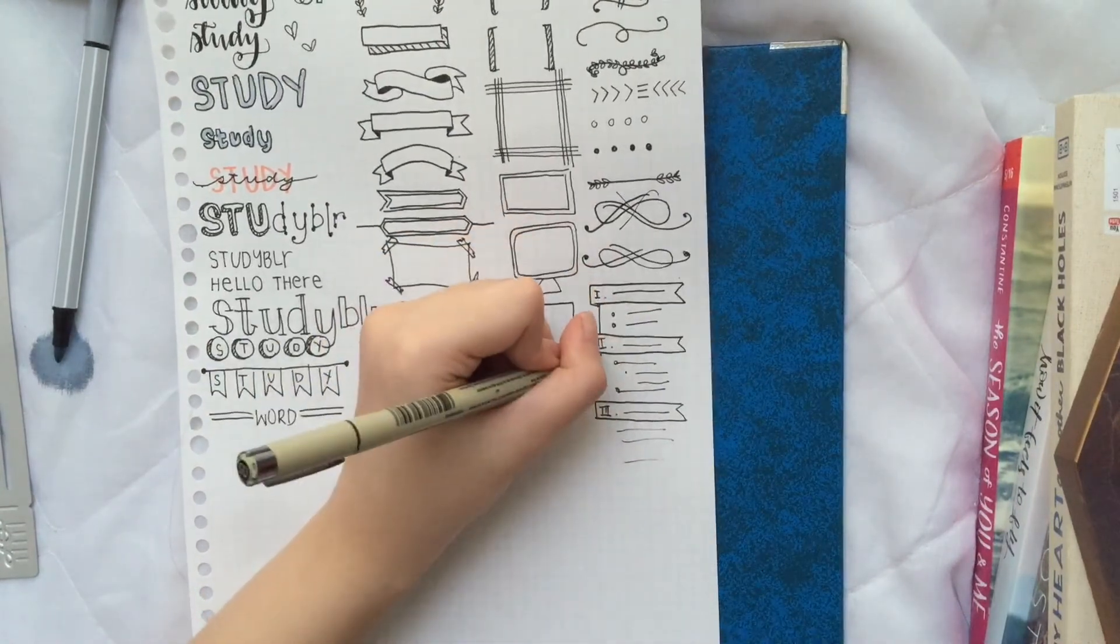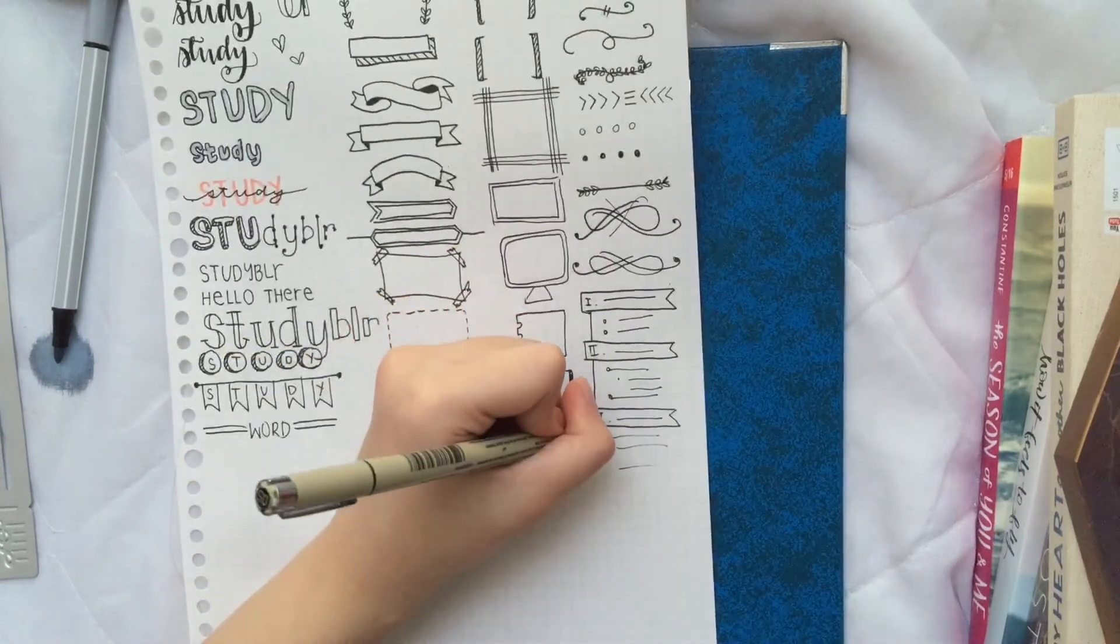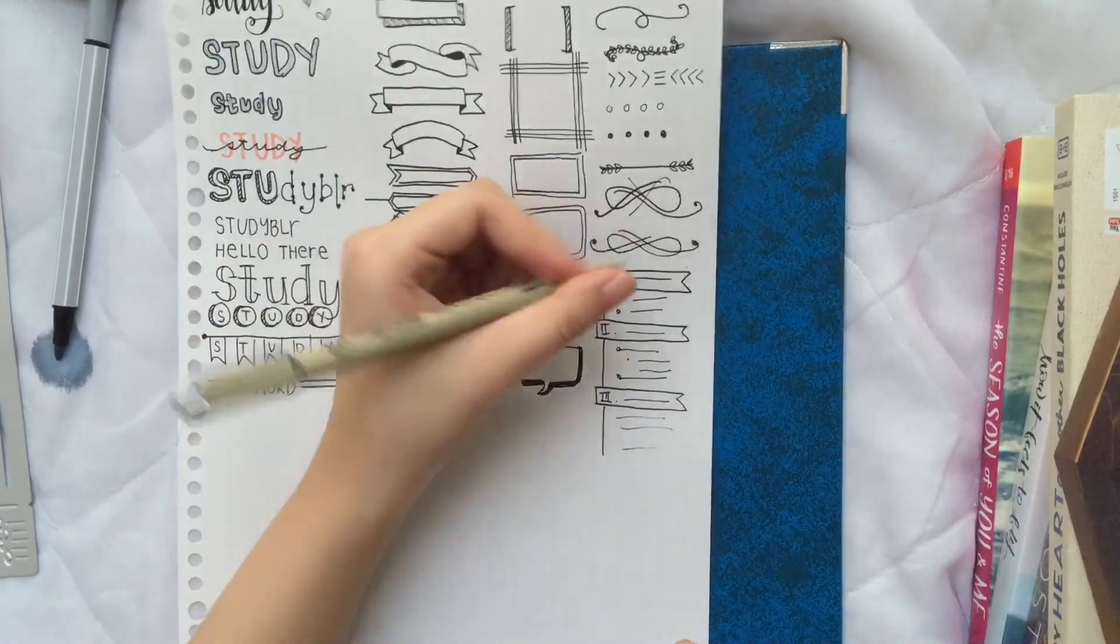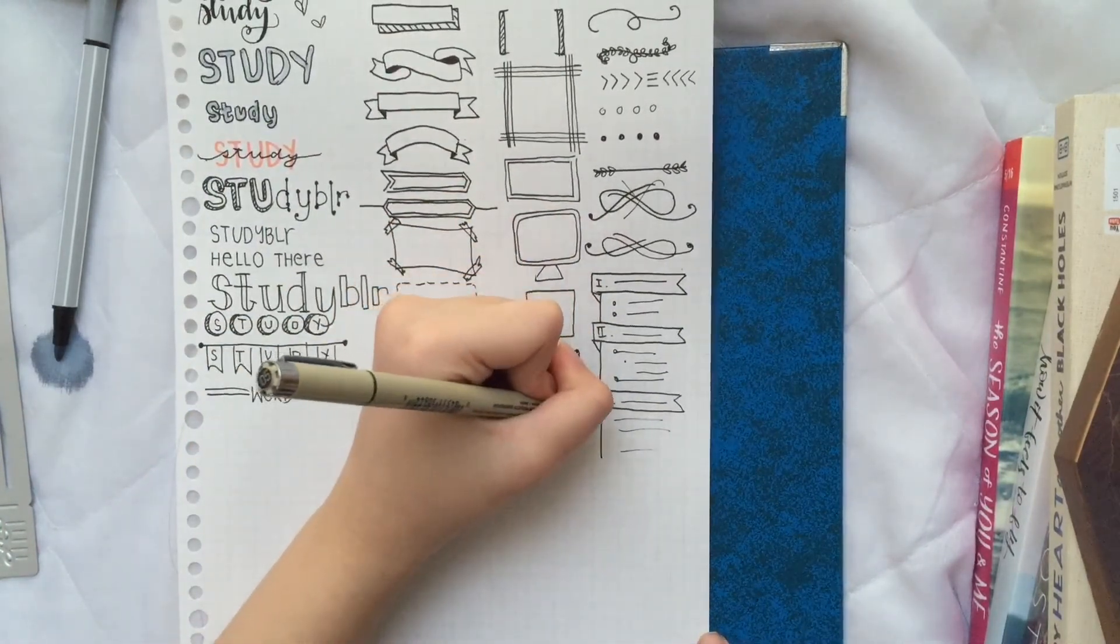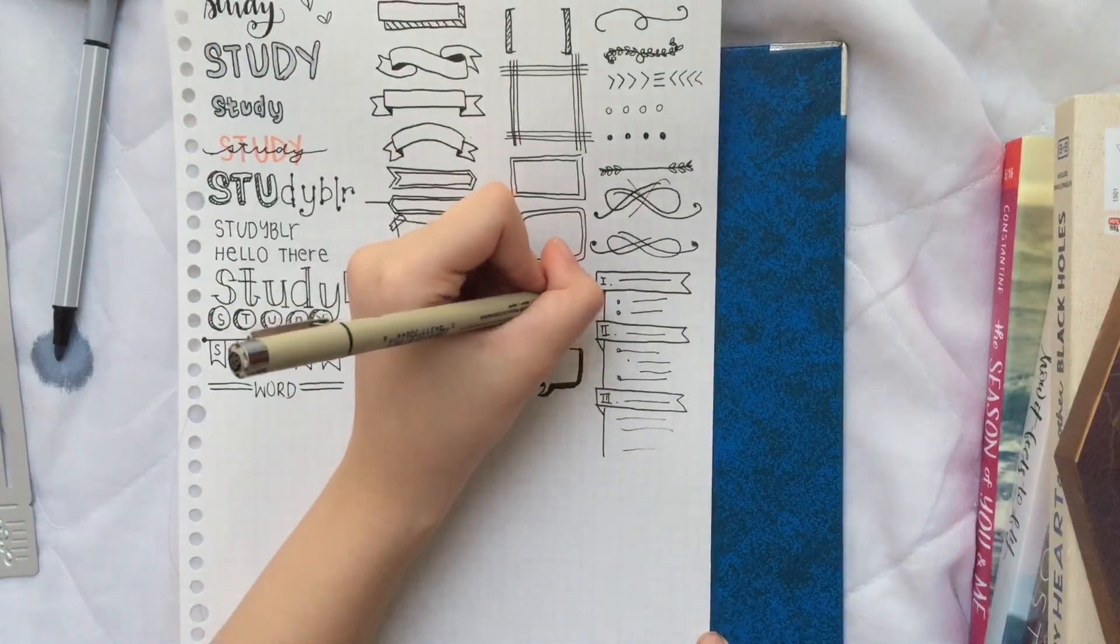And then after I'm done with everything, I just put a line over the side, and then do the slash thing. And you guessed it, shade it in.